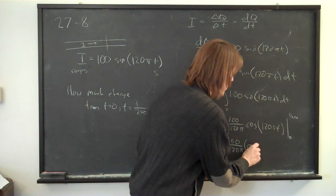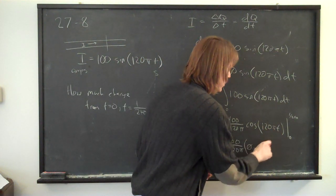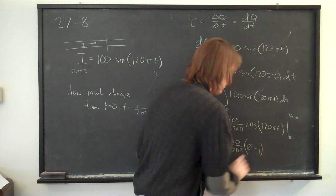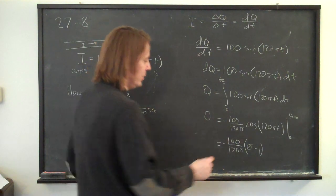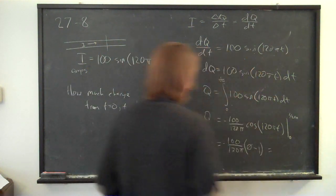And then, minus the cosine at zero, which is one. This part just gives you minus one, which cancels that minus, which gives you a positive charge.